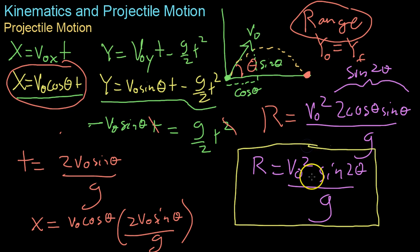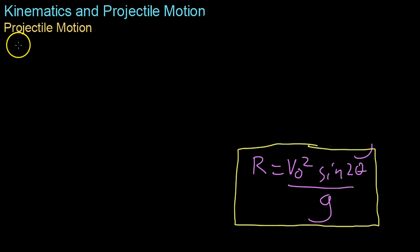And this equation is good to memorize because there's a lot of ball throwing cannon firing range equations on the AP. You just have to if you use it you have to reference it and say derived earlier because it's not a formula that's given to you.